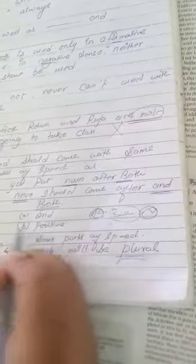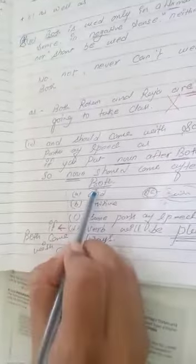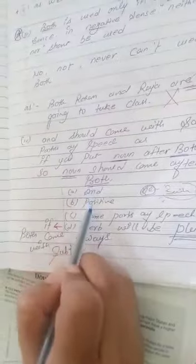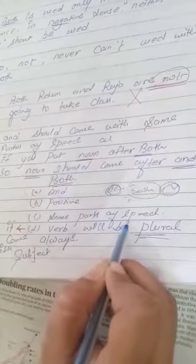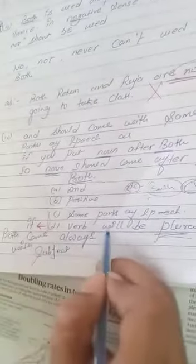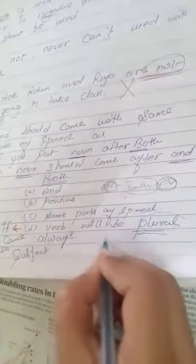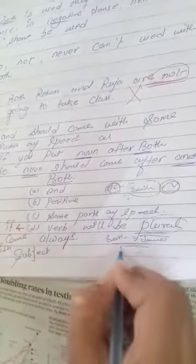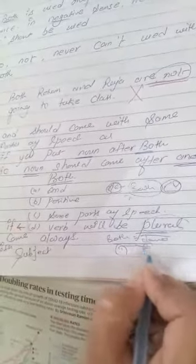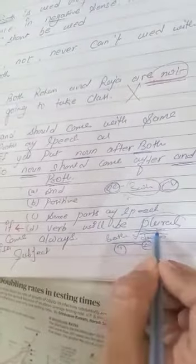So these are the rules. First, 'both' uses 'and' as a conjunction. Next, with positive sentences only, means affirmative sentences. And the same parts of speech should be there. And the last one, verb will always use as plural. Plural verb is to be used because both ka matlab kya hota hai? Dono. So these four rules are there with the word 'both'. I think it's clear to you.